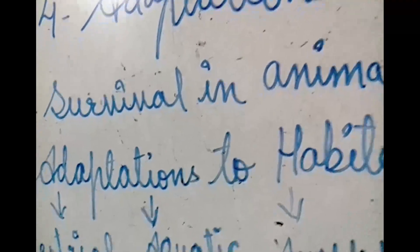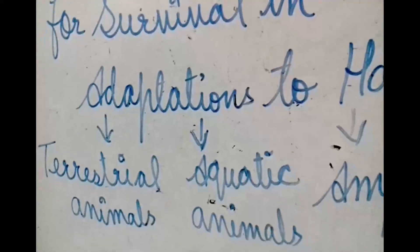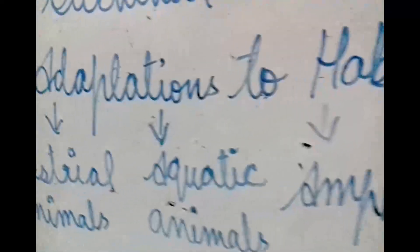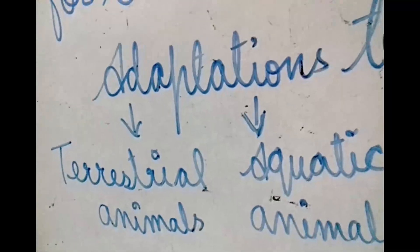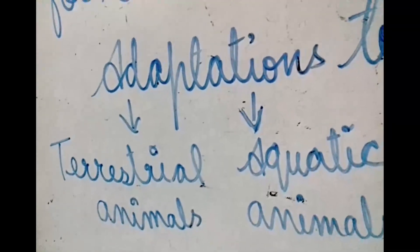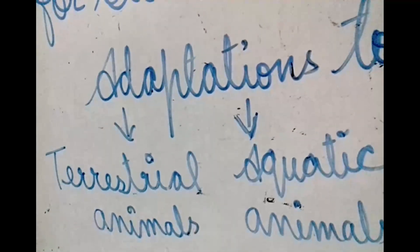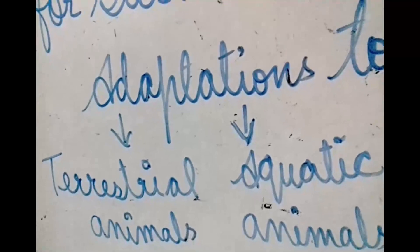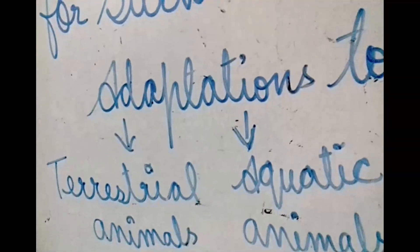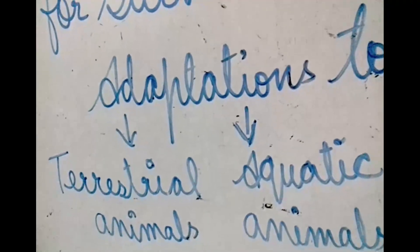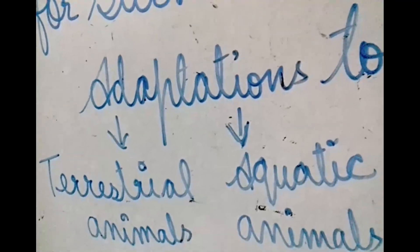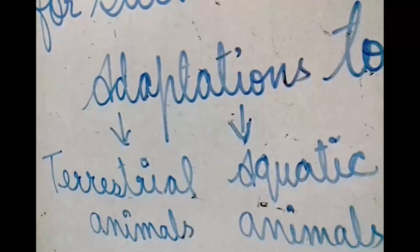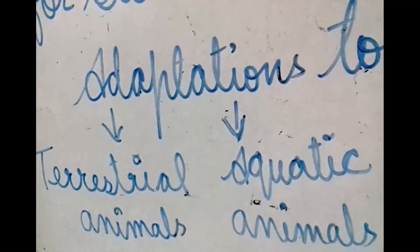Animals can therefore be grouped as terrestrial animals, aquatic animals, amphibians, aerial, and arboreal — these are the different kinds of habitat adaptations. First we will see terrestrial adaptations. Animals which live on land — for example dog, cat, horses, and lions — are some terrestrial animals. Their nervous system is well developed and they have well-developed sense organs.